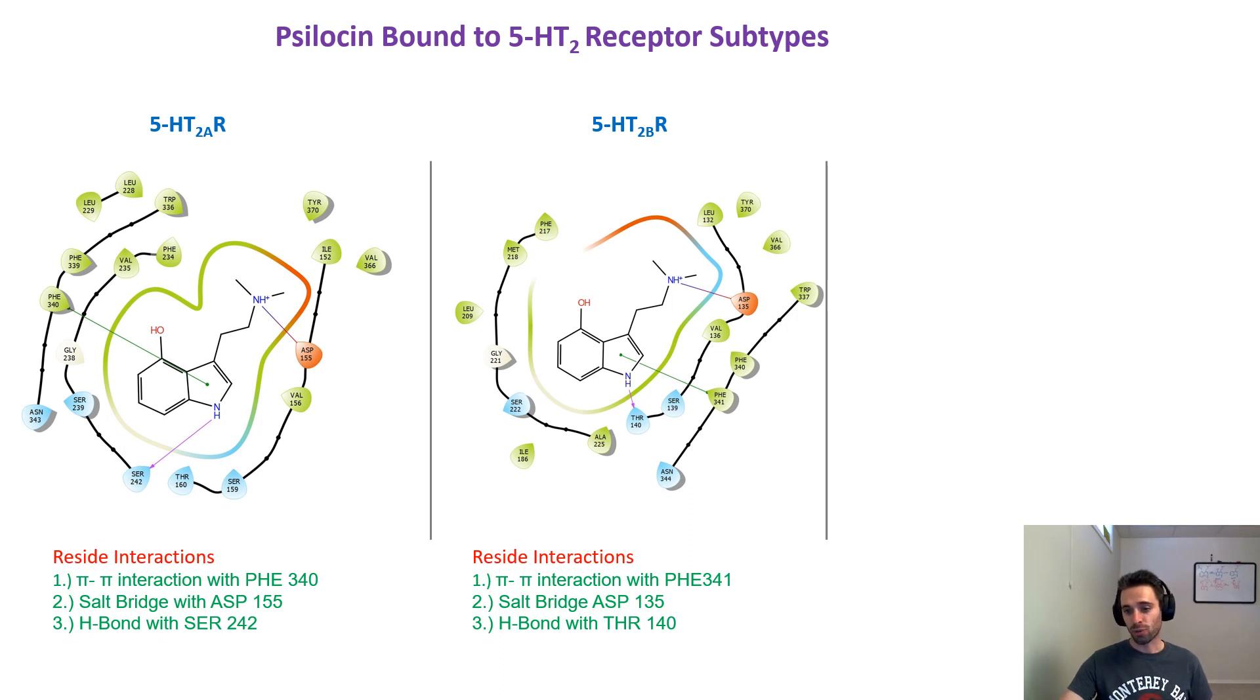We've got the salt bridge with aspartic acid 135, and then we've got the hydrogen bond with threonine 140. Notice how in the 5-HT2A, this threonine is actually a serine, but threonine still has the ability to hydrogen bond, so it does interact well with the NH group in psilocin.